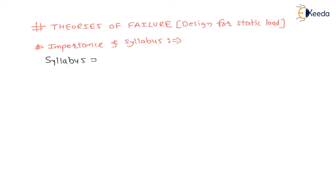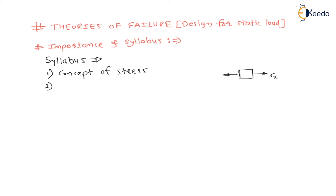For civil engineering, before understanding theories of failure, we need to understand the concept of stress, which is very very important. Then, on any one component, let us say it is subjected to multi-dimensional stresses — normal stress along the x-axis sigma x, normal stress along the y-axis sigma y, and shear stress tau along the x-axis.